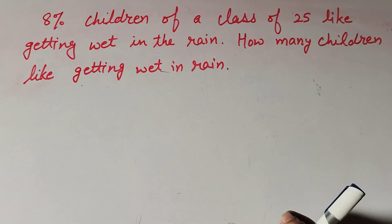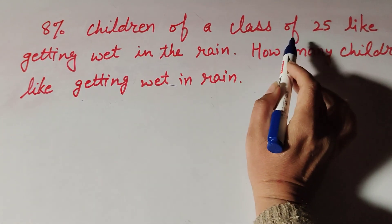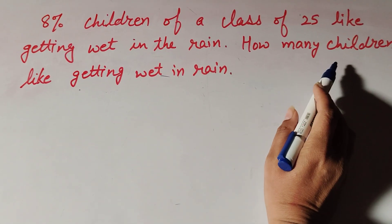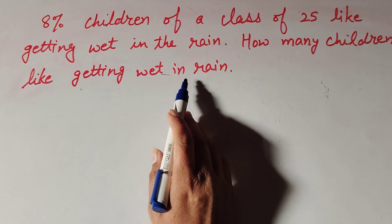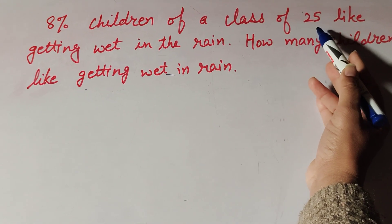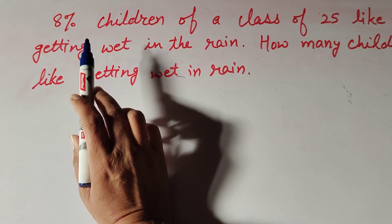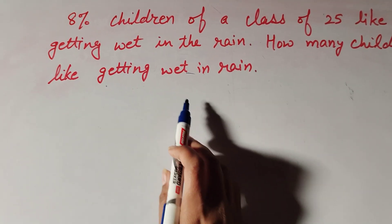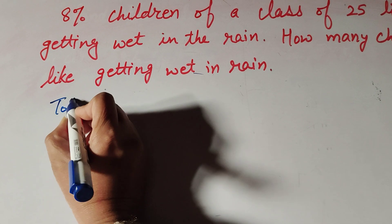Hello friends, welcome to my channel. In this video we discuss: 8 percent of children in a class of 25 like getting wet in rain. How many children like getting wet in rain? We have to find the number of children getting wet in rain. There are a total of 25 children, and out of 25, 8 percent of children like to get wet in rain.